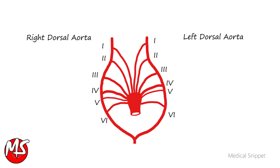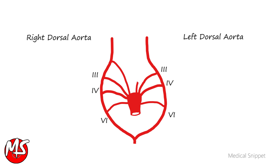The fifth arch either never forms or forms incompletely and then regresses. The first arch disappears, but a small portion persists to form the maxillary artery. The second arch disappears, and the remaining portion forms the stapedial artery.